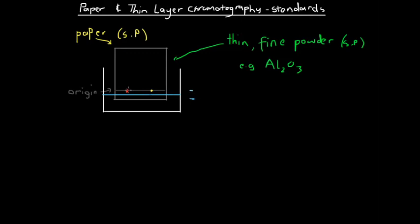If the water level is above the spots of solution, those spots will just dissolve into the water and we'll get a messy chromatogram. So we want the water height to be below the origin but above the bottom of the paper, so the water naturally seeps up and carries the solution with it rather than dissolving it.